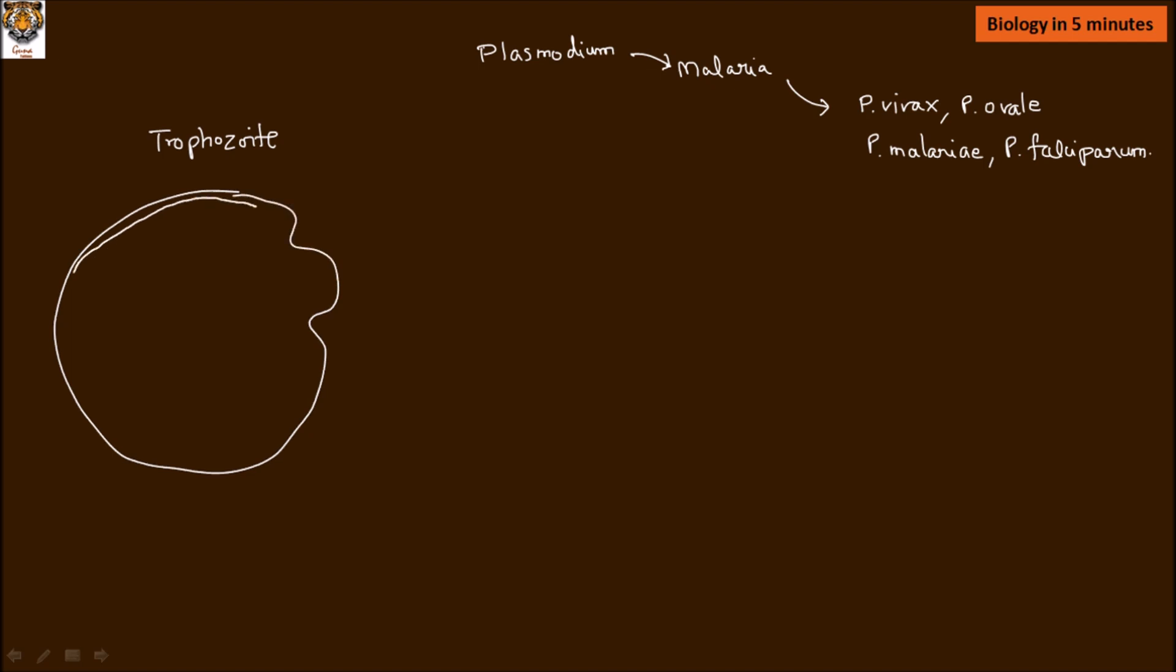Trophozoite structure: it is a globular structure externally covered by a double membrane structure called the plasmalemma. Plasmalemma is almost equal to plasma membrane, and it contains some endoplasmic reticulum structures here and there.